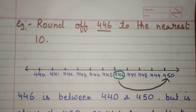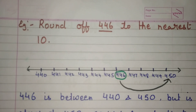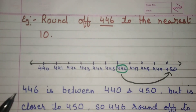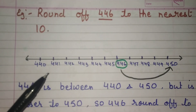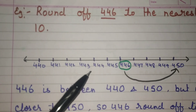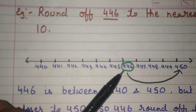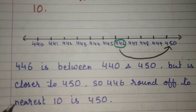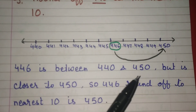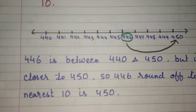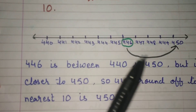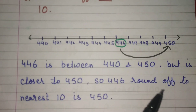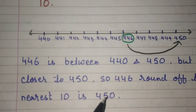Let's take another example: round off 446 to the nearest 10. When we put 446 on the number line starting from 440 — 441, 442, 443, 444, 445, 446, 447, 448, 449, 450 — 446 is between 440 and 450, but it is closer to 450. So 446 rounded off to nearest 10 is 450.